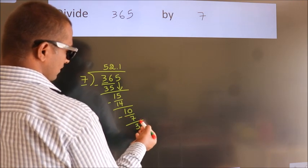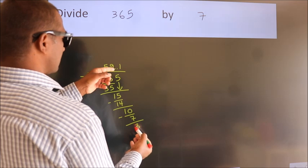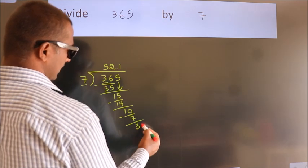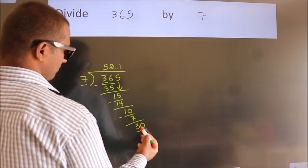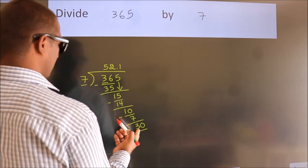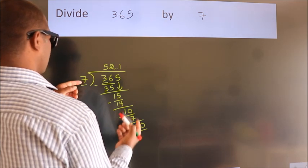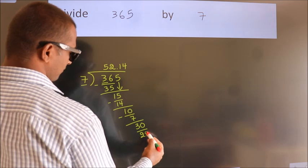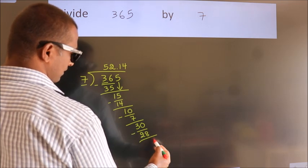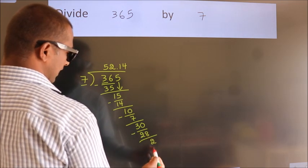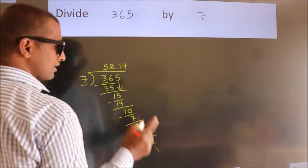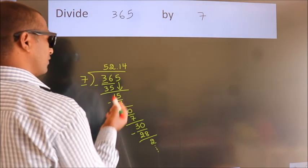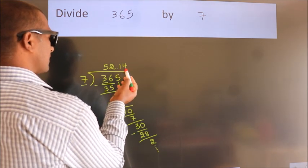After this, we already have the decimal, so directly take 0. Now we have 30. A number close to 30 in the 7 table is 7 times 4 equals 28. Now we subtract. We get 2, and the division continues. It is enough if we do up to 2 decimal places.